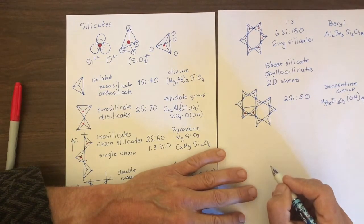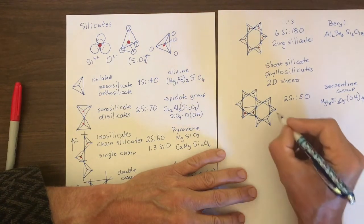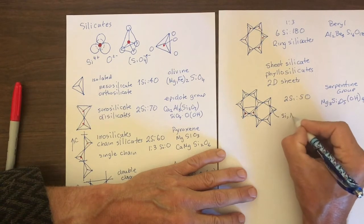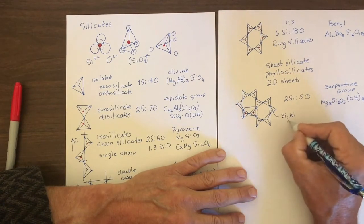More complicated sheet silicates, like micas and chlorite. Some of these tetrahedra have, in addition to silica, they also have aluminum in tetrahedral coordination.